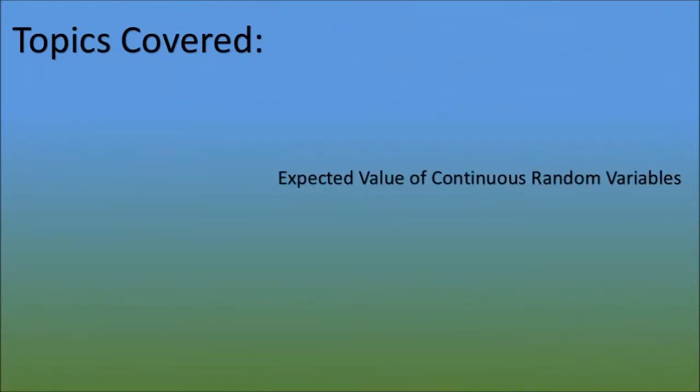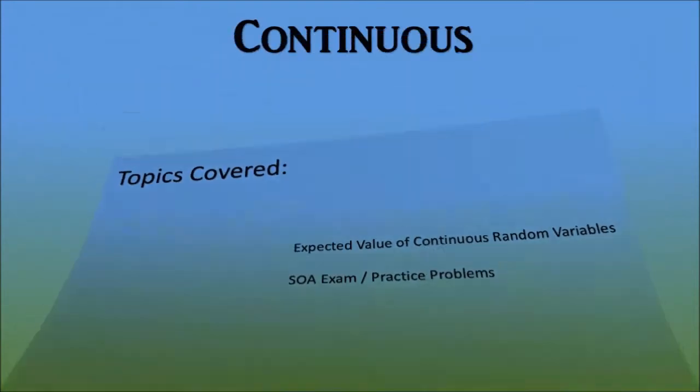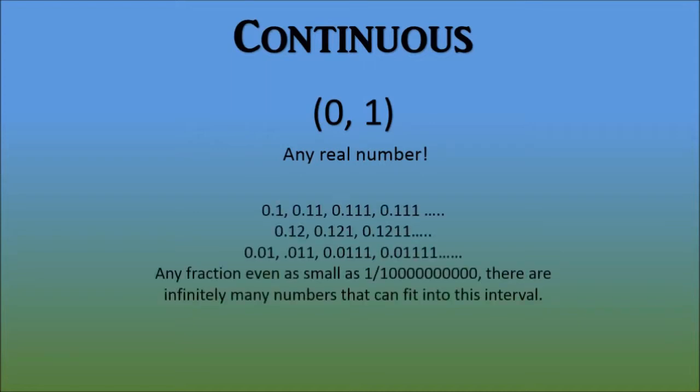So what exactly does it mean to be continuous? Well, let's look at the interval from zero to one. How many numbers can fit in between these two numbers? Basically anything. You can have a decimal like point one or point one one one point one two or even a fraction as small as one over a trillion.